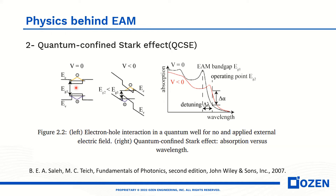If we connect reverse bias voltage to the quantum structure, we can see that our band gap is also tilted, and electrons move toward the positive pole while holes move to the negative pole. For this reason, the peak of the density of states is also shifted. Looking at absorption versus wavelength for the quantum structure, at V equals zero we have two excitonic peaks, and when we connect the reverse bias voltage, the curve is red-shifted to longer wavelengths.